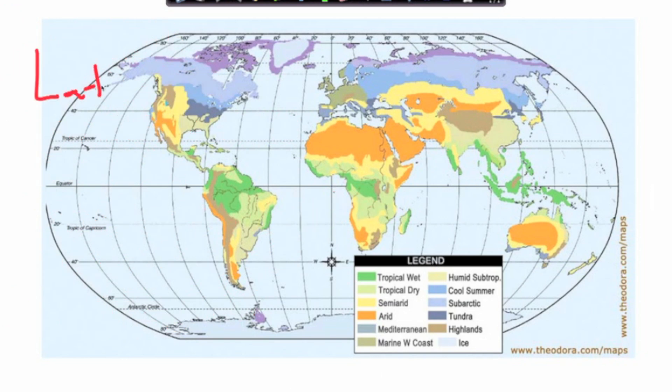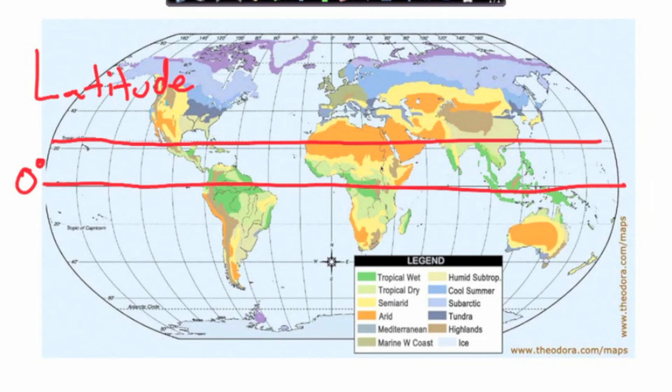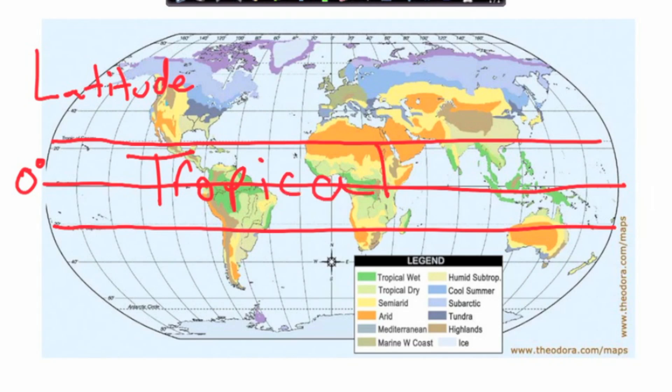So latitude, let's go over that one really quick. As you know, this line I'm drawing here is the equator, zero degrees latitude. And basically between the tropics, which is the Tropic of Cancer right here and the Tropic of Capricorn right here, the weather in this area is going to be tropical. So pretty much you can bet that if you're in this zone, it's going to be pretty warm all year long.